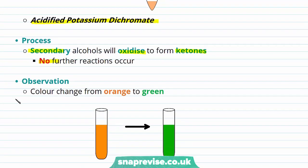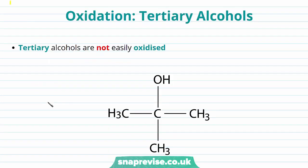As oxidation is indeed occurring, we see a color change from orange to green in our solution. We've discussed how our tertiary alcohols are not easily oxidized. We have an example of a tertiary alcohol here — 2-methylpropan-2-ol. This tertiary alcohol, if heated with acidified potassium dichromate, will not undergo oxidation and we will observe no color change.